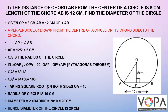Taking the square root on both sides, OA equals 10. So the radius of the circle is 10 cm. Therefore, diameter equals 2 times radius, which equals 2 times 10, equals 20 cm. Hence the diameter of the circle is 20 cm.